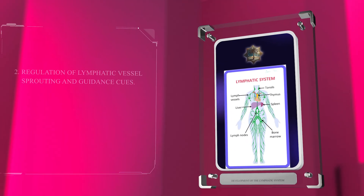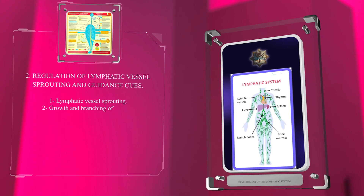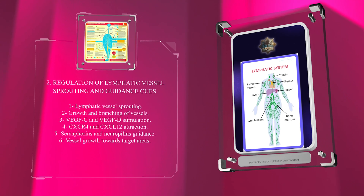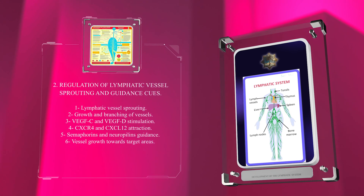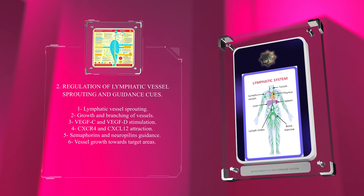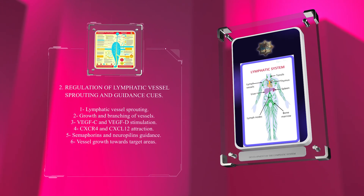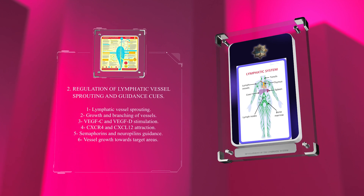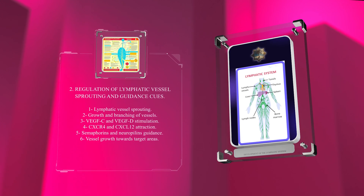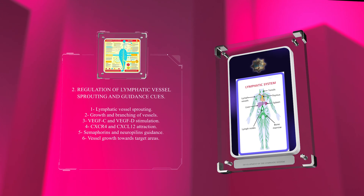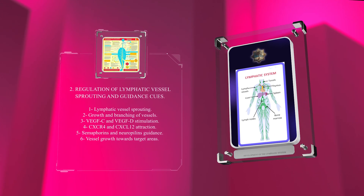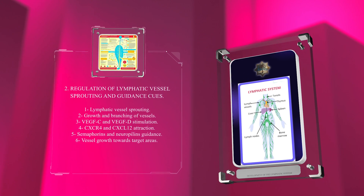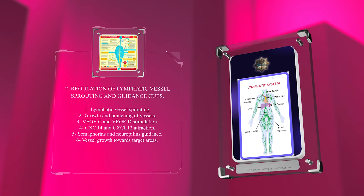Lymphatic vessel sprouting, a crucial process in development, involves the growth and branching of vessels. VEGFC and VEGFD stimulate sprouting, while CXCR4 and CXCL12 attract cells. Semaphorins and neuropilins guide cells and direct vessel growth towards target areas.